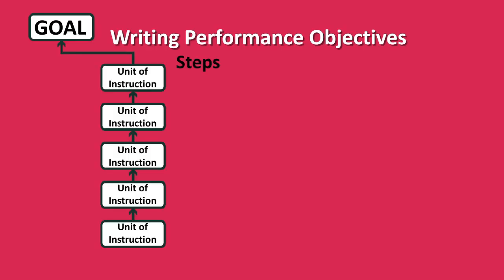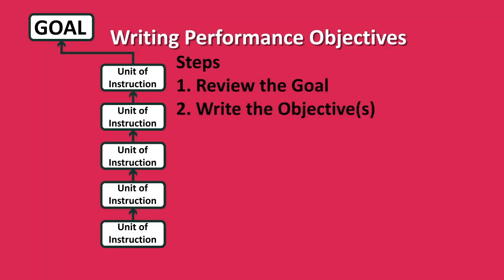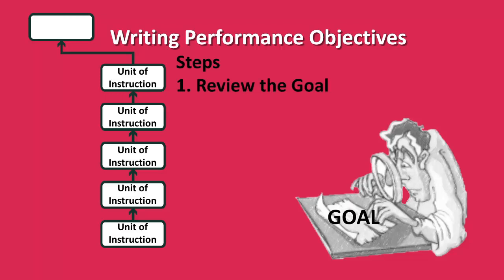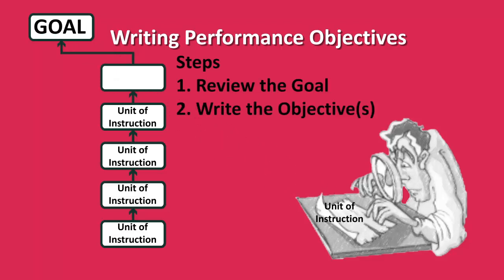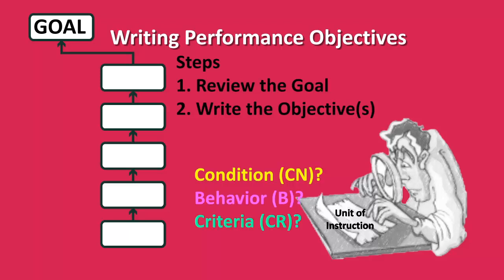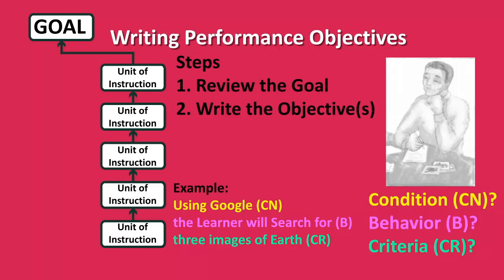The process for writing objectives includes reviewing the goal, writing the objective, considering the assessment for later, and considering entry skills. First, the designer should review the goal and ensure that it has a description of the ultimate concept — if it doesn't, the goal should be rewritten. Next, the designer should write a terminal objective for each unit of instruction, ensuring that each terminal objective includes all three parts: a condition, a behavior, and criteria. This process should also include writing objectives for subordinate skills.